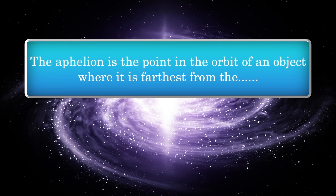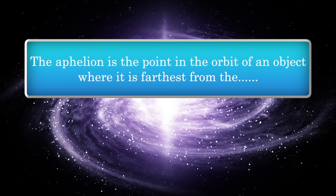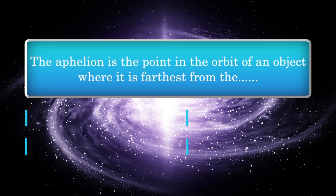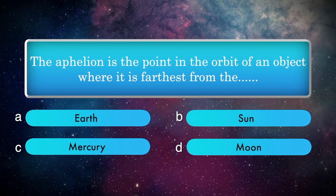The Aphelion is the point in the orbit of an object where it is farthest from the? Options: Earth, Sun, Mercury, Moon.